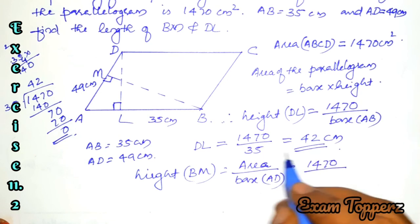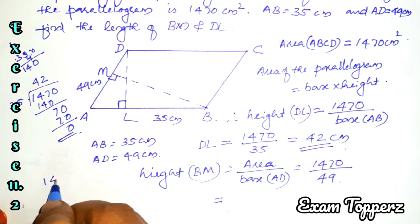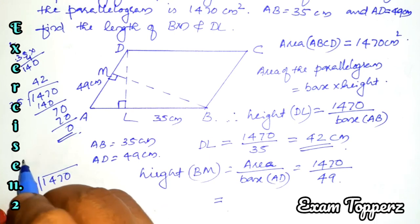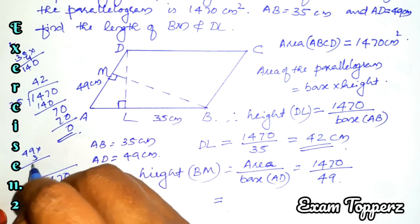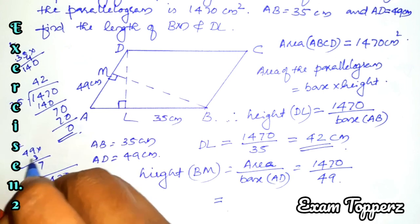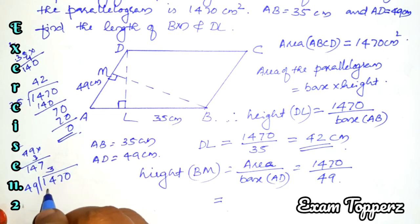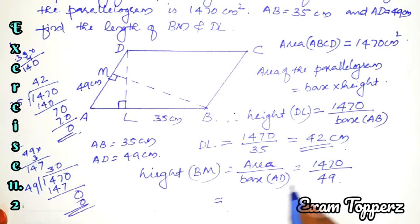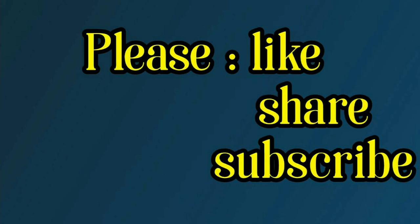Now, 1470 divided by base 49: working through — 49 × 3, 3 × 9 = 27, remainder 2; 3 × 4 = 12, 12 + 2 = 14, giving 147 — so 1470 ÷ 49 = 30. Therefore BM = 30 cm.